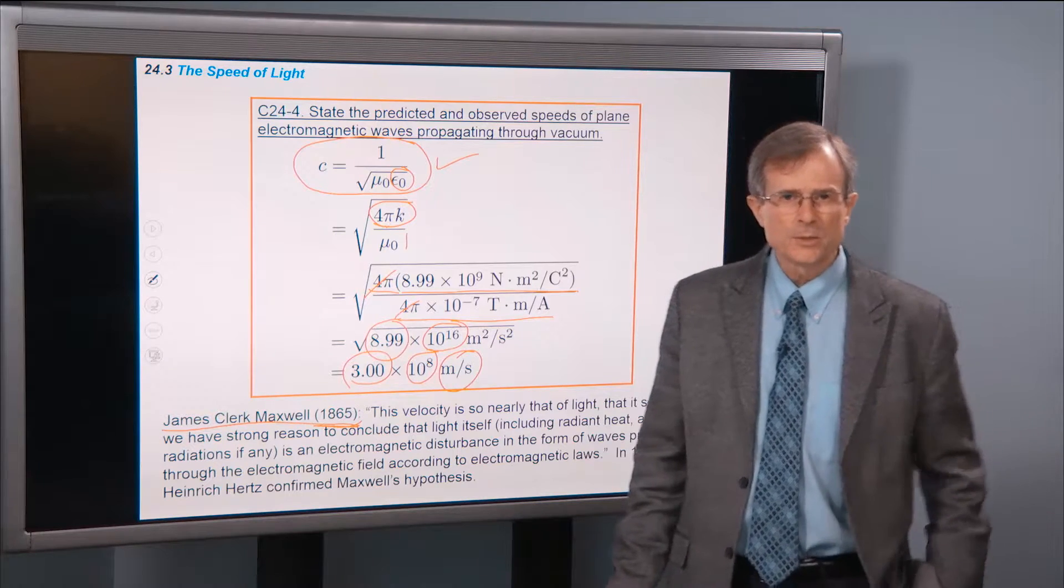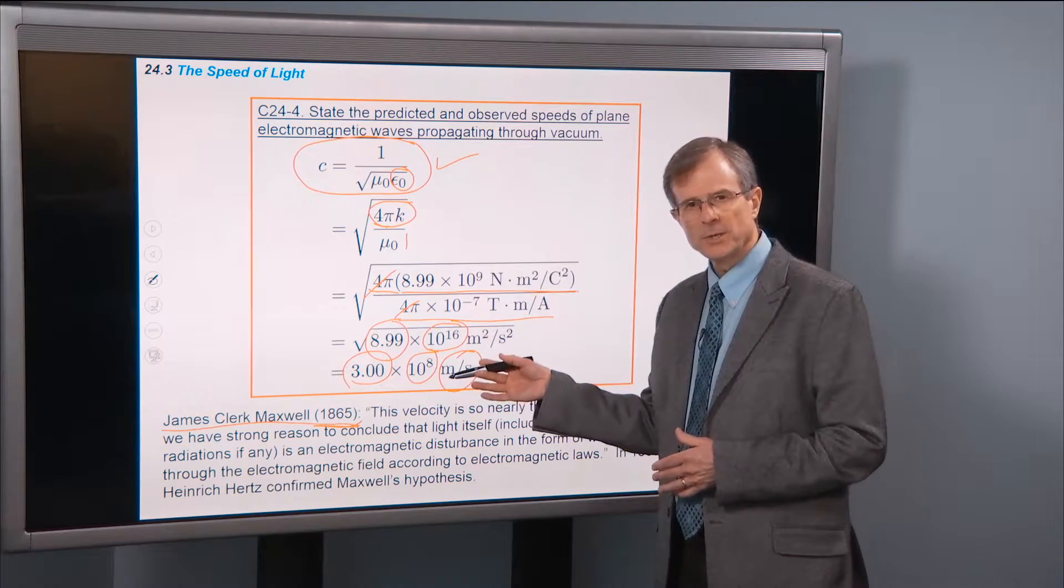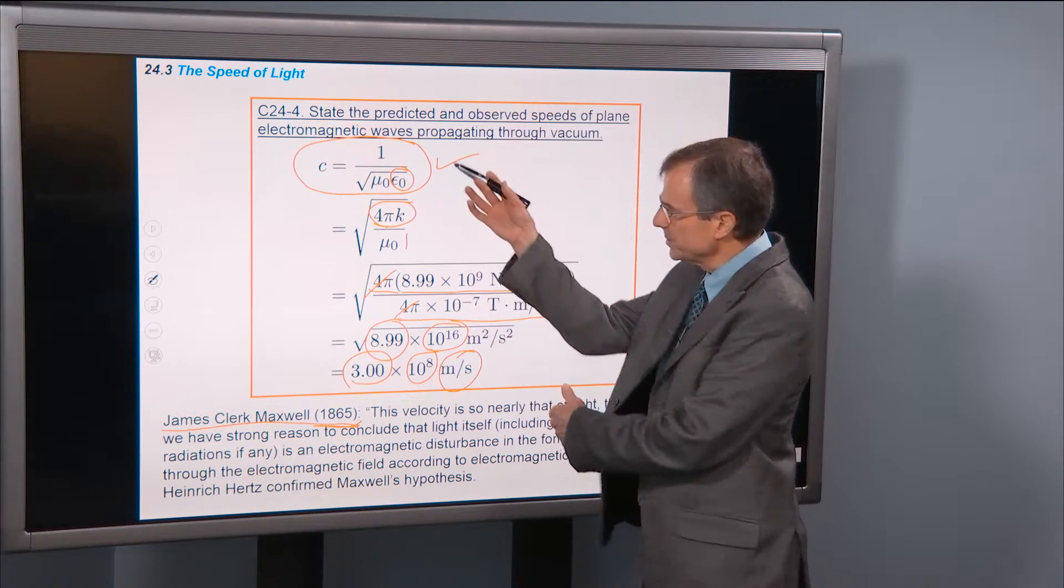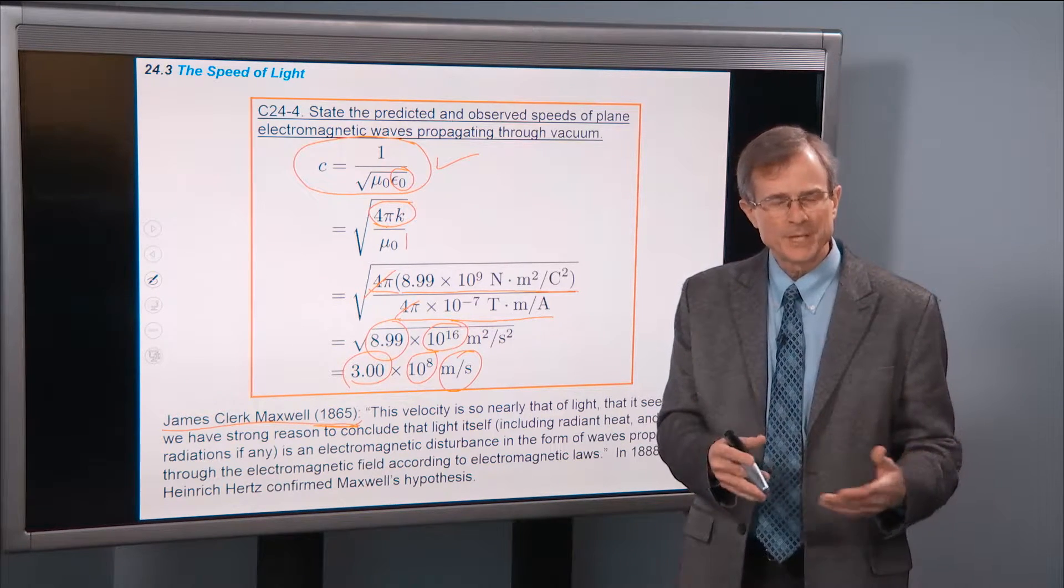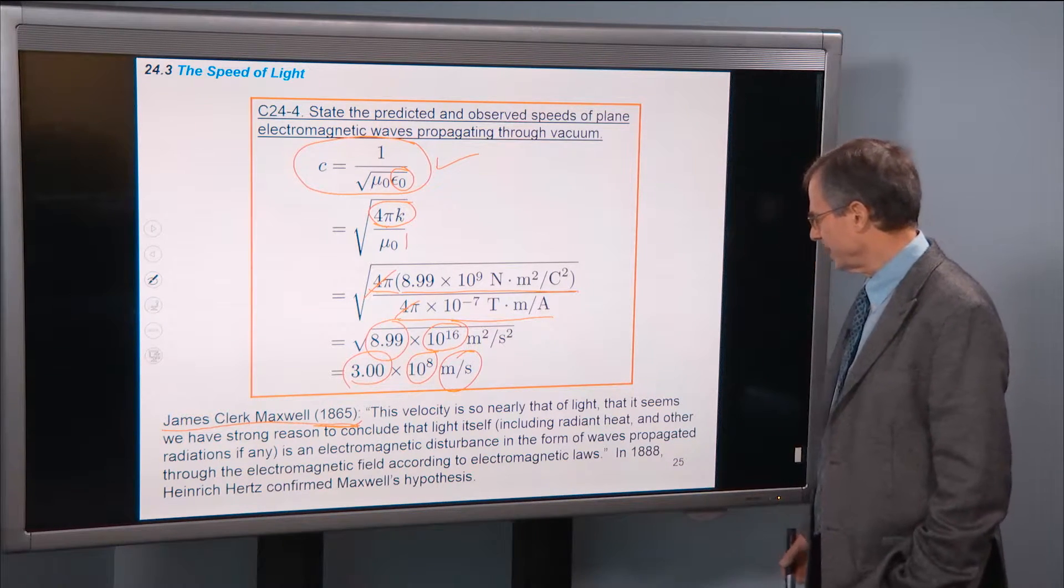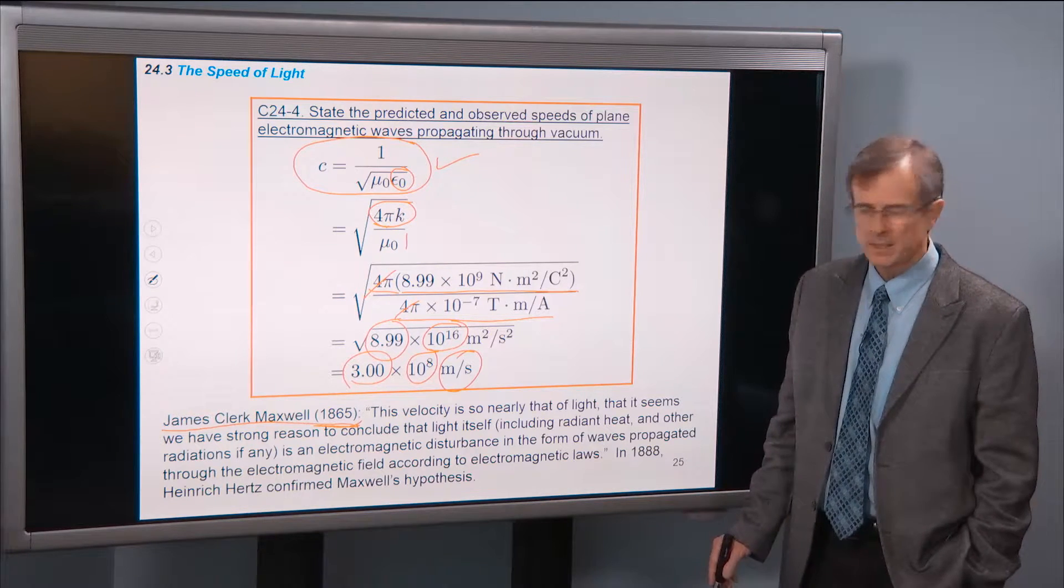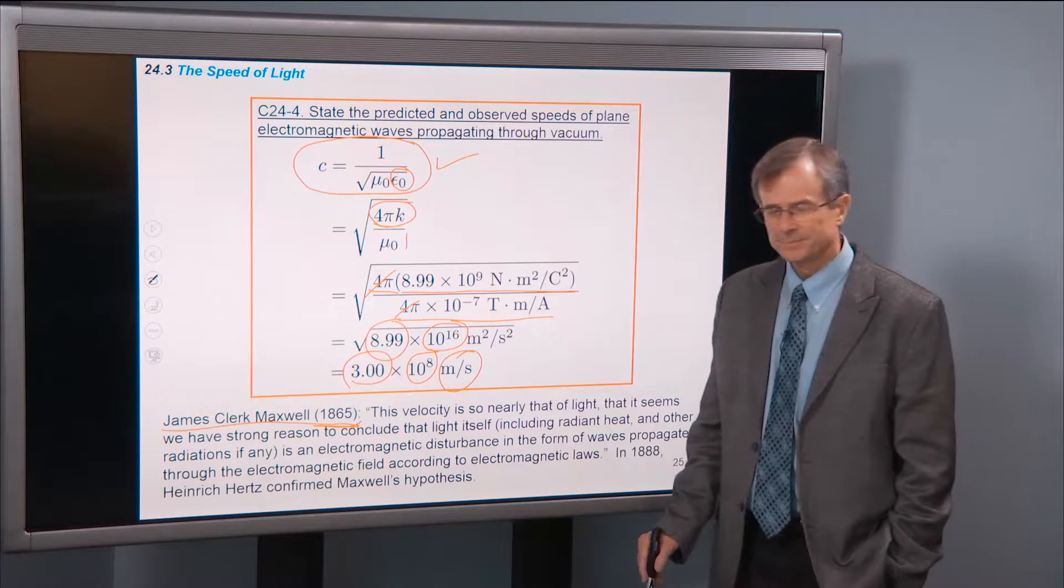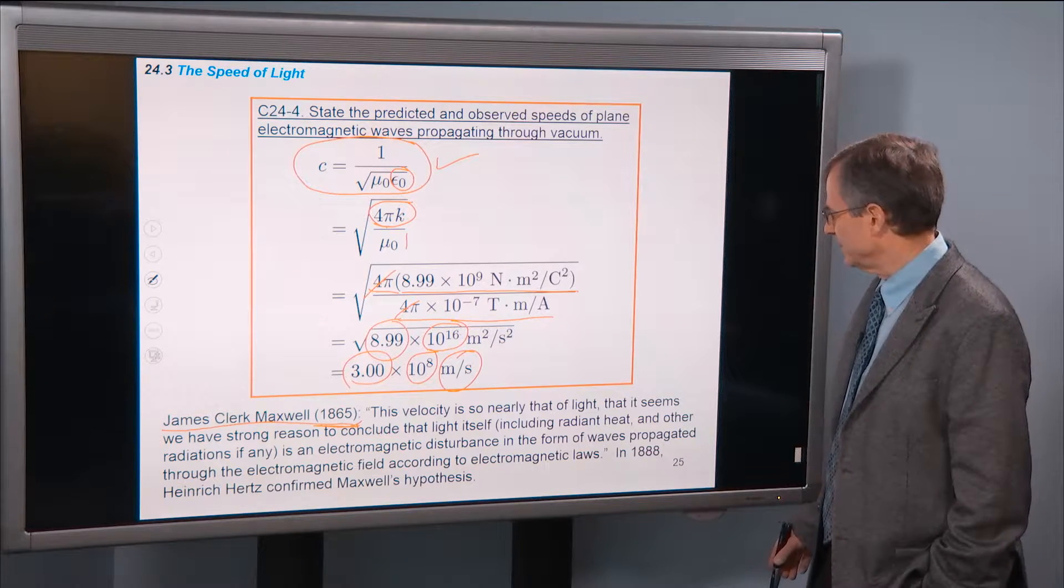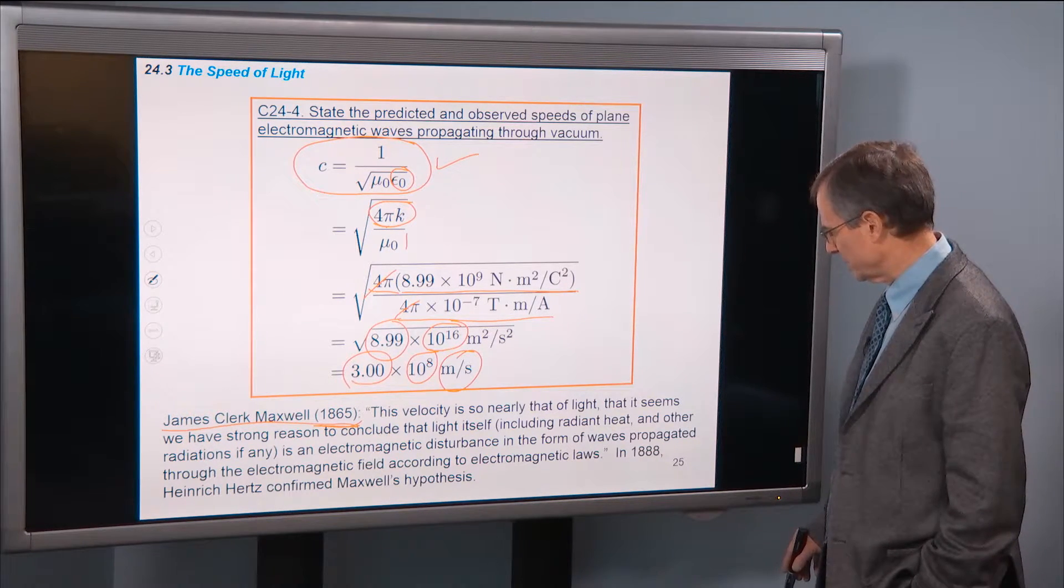At that time, there had been some rudimentary measurements of the speed of light. And this is what Maxwell said when he finished this calculation of electromagnetic radiation, which was not known at the time to be related to light. And he compared the predictions of his calculation with the rudimentary measurements of the speed of light from that time. And Maxwell said, This velocity is so nearly that of light that it seems we have strong reason to conclude that light itself, including radiant heat and other radiations, if any, he didn't know about gamma rays or X rays,